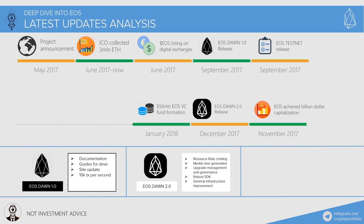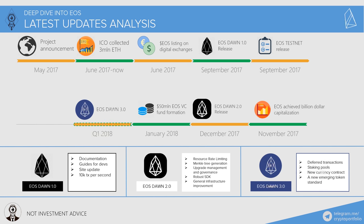January 2018: Block.one announced the creation of a $50 million fund to finance development of DApps on the platform — money is a great incentive for blockchain developers to start creating decentralized apps on EOS. In Q1 2018, Block.one plans to publish EOS Dawn 3.0, promising to include delayed transactions, staking pools, a currency contract, and a new emerging token standard. In June 2018, they plan to publish EOS version 1.0.